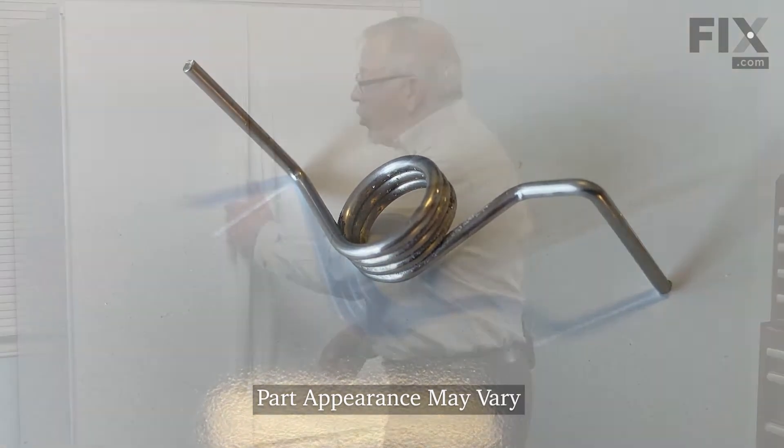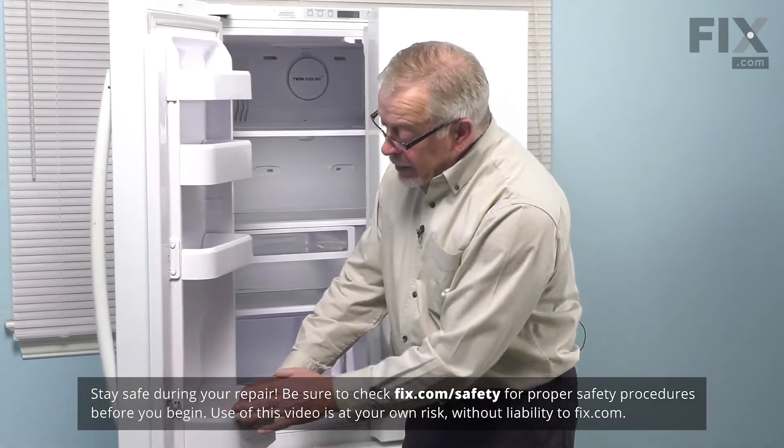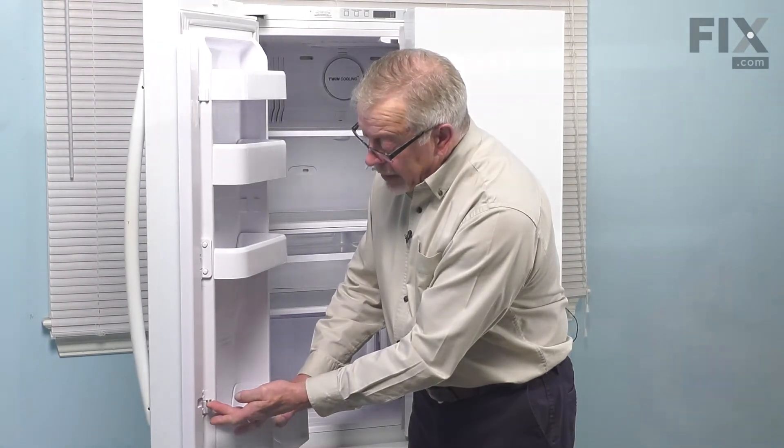First step will be to open up the left-hand door and then we'll flip open that mullion and that will expose the spring that we're going to change if it's still intact.